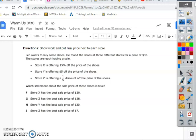So, Leo wants to buy some shoes. He found the shoes at three different stores for a price of $35. The stores are each having a sale. Store X is offering 15% off the price of the shoes. Store Y is offering $5 off the price of the shoes. And Store Z is offering 1/5 discount off the price of the shoes. Which statement about the sale price of these is true?